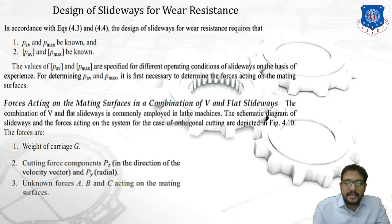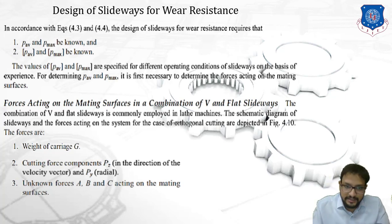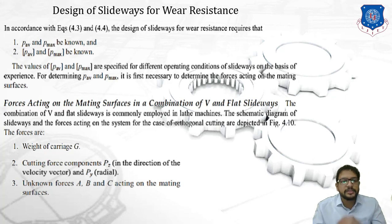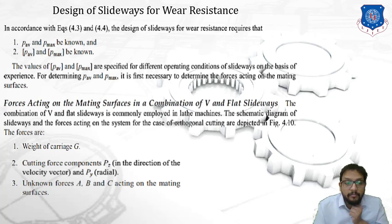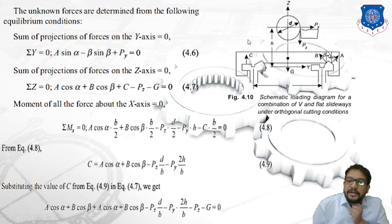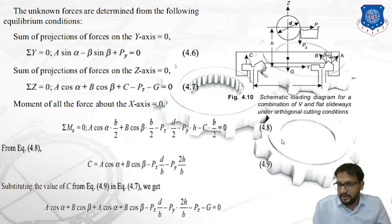The forces acting on the system are: first, the weight of the carriage G, acting in a downward direction; second, cutting force components — Pz in the direction of the velocity vector and Py in the radial direction, perpendicular to the axis of the workpiece; and third, unknown normal forces A, B, and C acting on the mating surfaces. This is an important derivation that has been asked in exams.